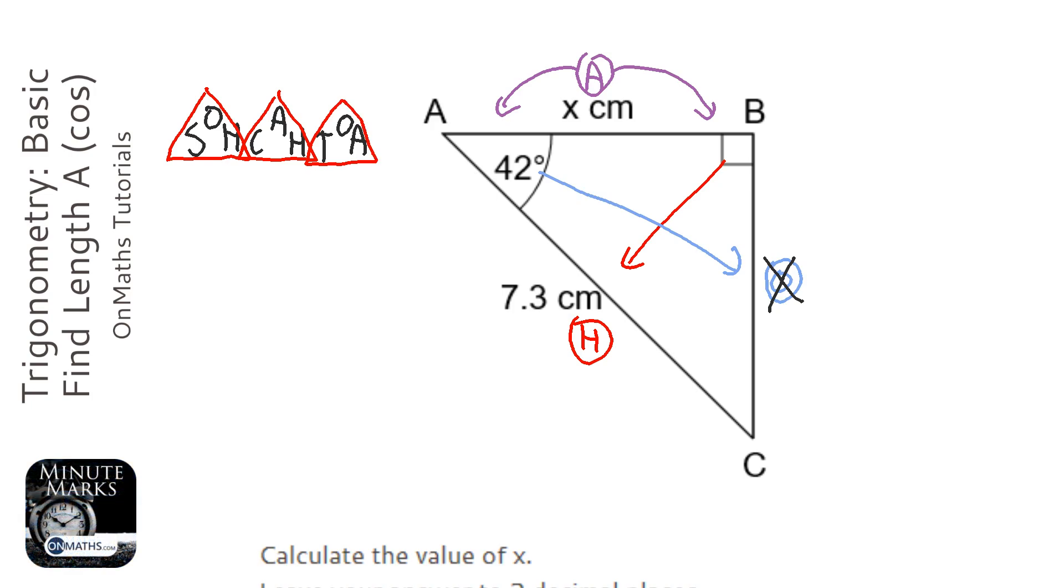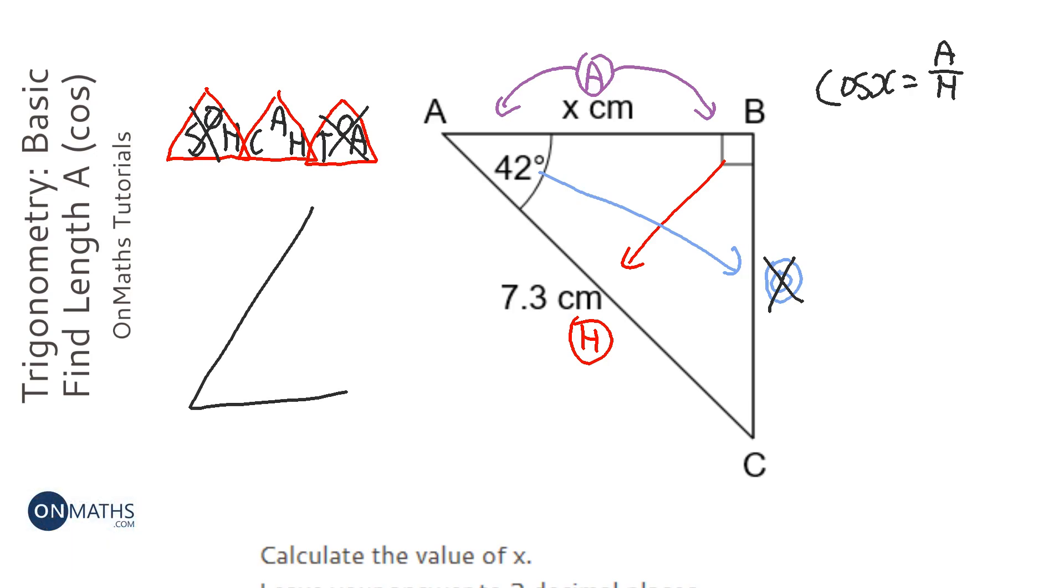SOH and TOA each have an opposite, and we've crossed the opposite out. So the only one with the adjacent and the hypotenuse is CAH. Now at this stage you can write cos X equals A over H, substitute it in and solve it. I'm going to do a slightly different method using a triangle.